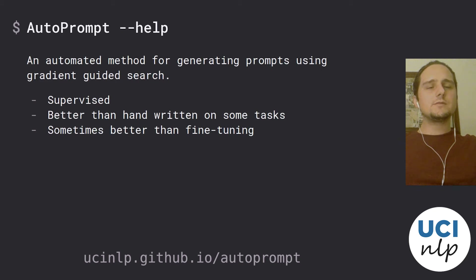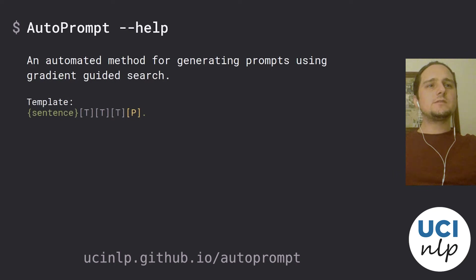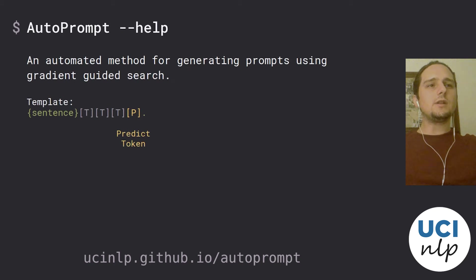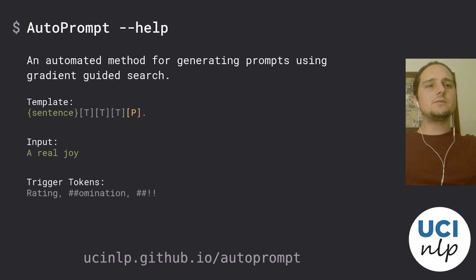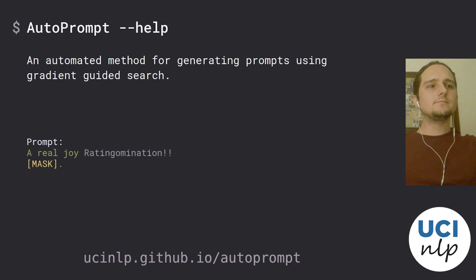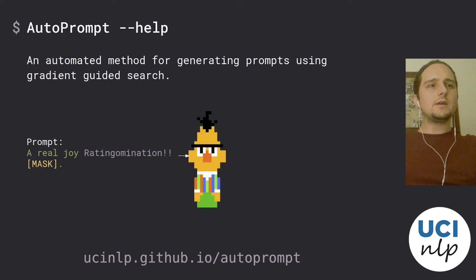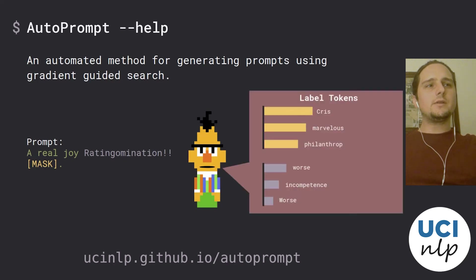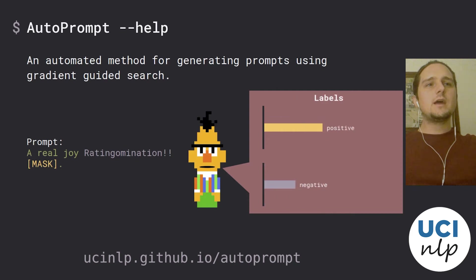The method generally works as follows. We begin with a template which specifies where the task inputs should occur in the prompt, as well as placeholders for a number of trigger tokens that are learned by Autoprompt, and a predict token upon which we will measure the language model outputs. Using this template, we can combine an input from the dataset along with an instantiation of the trigger tokens to produce a prompt. The prompt is fed into the language model, and we collect the probabilities over a set of label tokens in order to get overall label probabilities from the model. As can be seen, our prompts aren't guaranteed to be grammatical or even sensible, but they produce more effective results than manual prompts, which we will show in the experiments section.